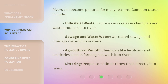Rivers can become polluted for many reasons. Common causes include industrial waste — factories may release chemicals and waste products into rivers. Sewage and waste water — untreated sewage and drainage can end up in rivers. Agricultural runoff — chemicals like fertilizers and pesticides used in farming can wash into rivers. Littering — people sometimes throw trash directly into rivers.